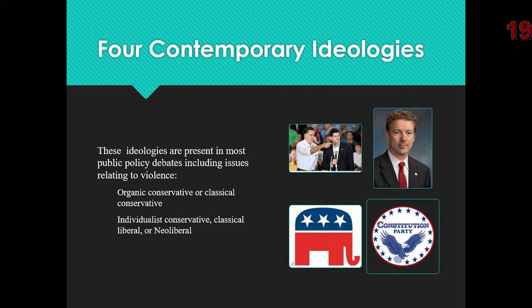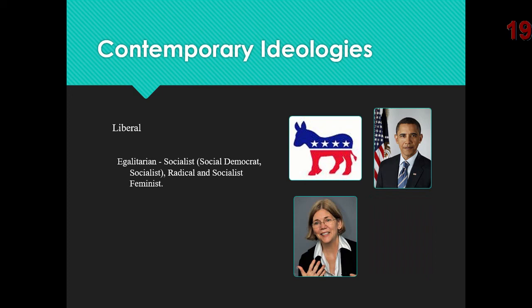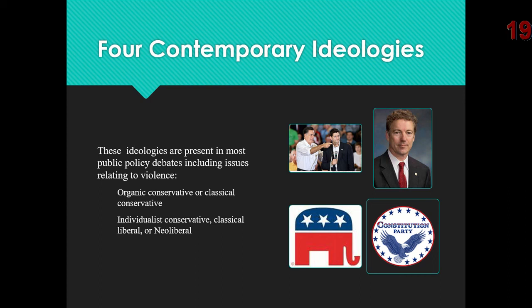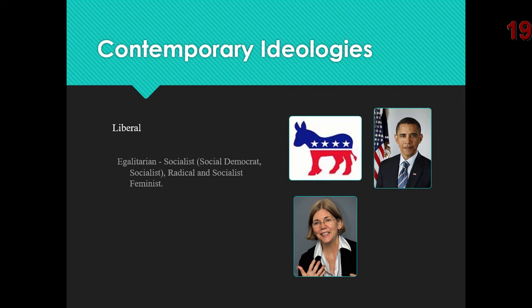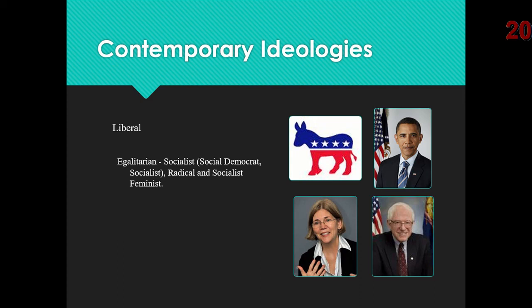The four contemporary ideologies in the book — you can skim over these or read the separate PowerPoints, but they're not going to be on the exam. These ideologies appear in most public policy debates, including issues related to violence. There are two types of conservatives — organic and classical — and two types of liberals — individualist and classical. There are also the socialists: social democrats, socialists, radicals, and socialist feminists.